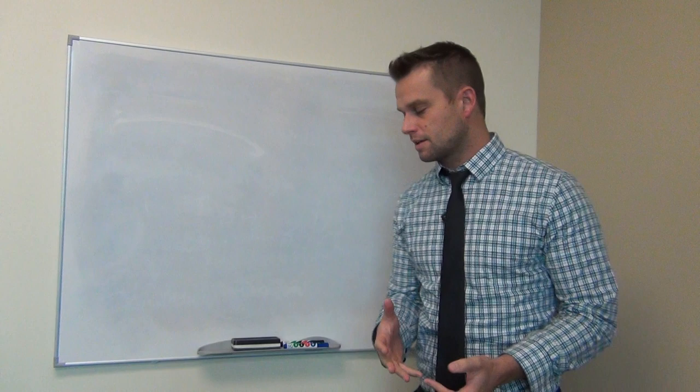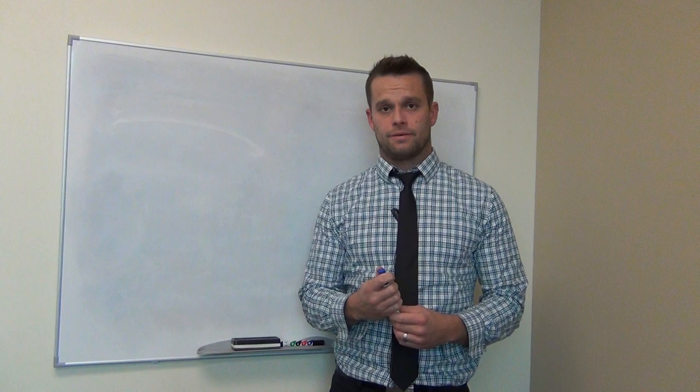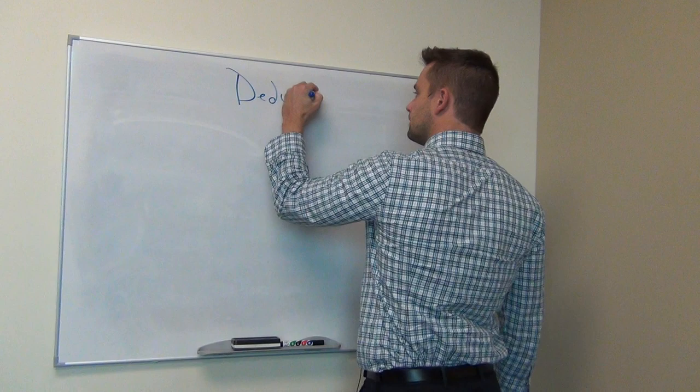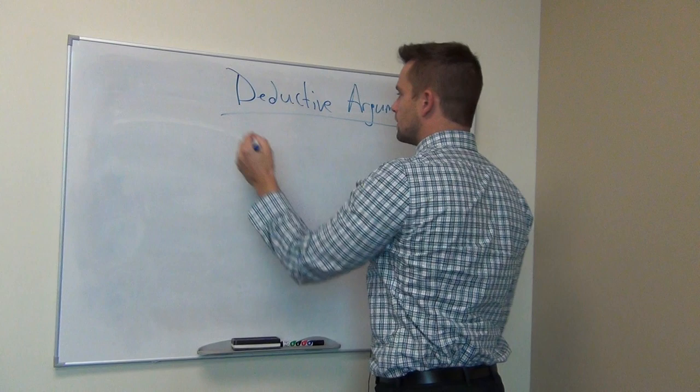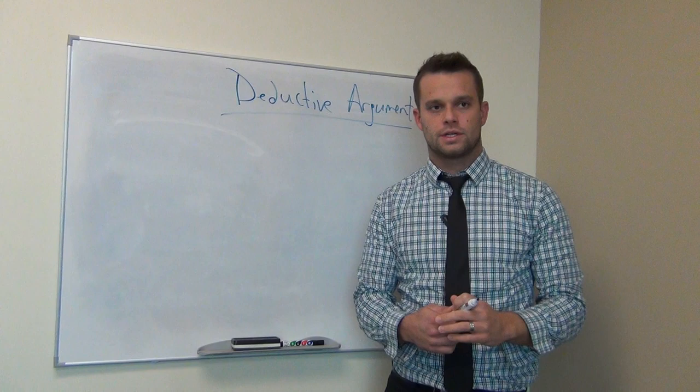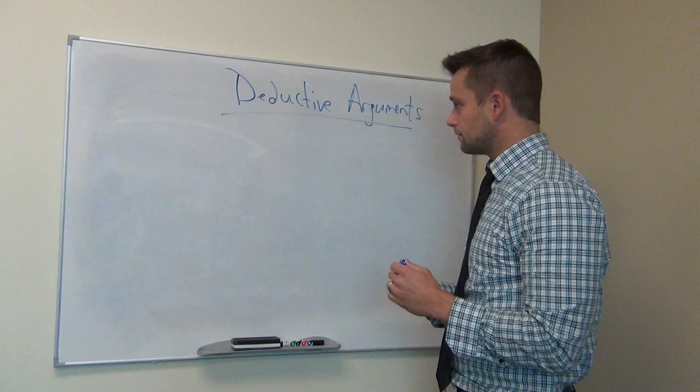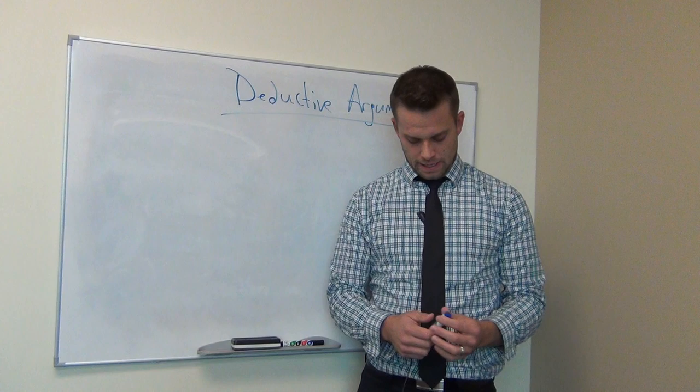Hi everybody. This video is going to be about a continuation of deductive arguments, and we're going to talk about validity and invalidity and soundness in deductive arguments. You might remember that a deductive argument is an argument that attempts to guarantee the truth of the conclusion, or to prove its conclusion. There are two different types of deductive arguments: invalid deductive arguments and valid deductive arguments.